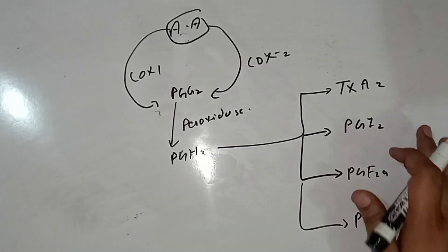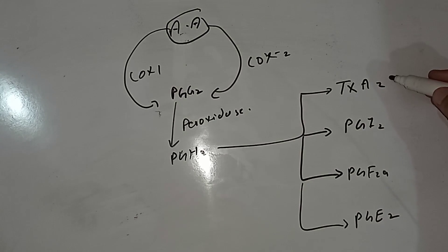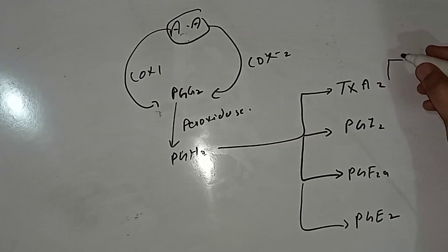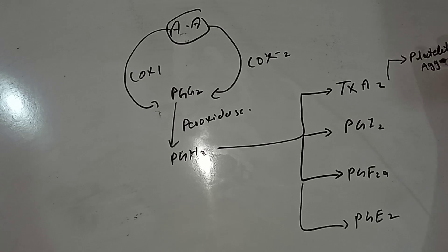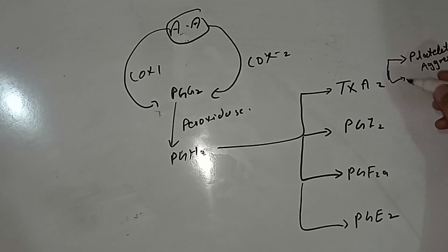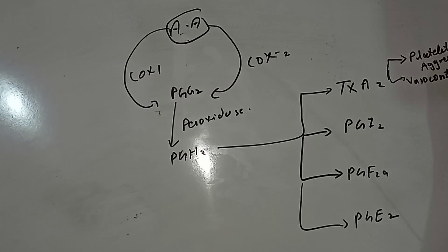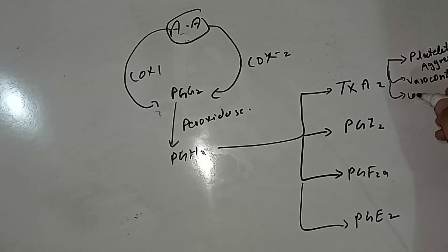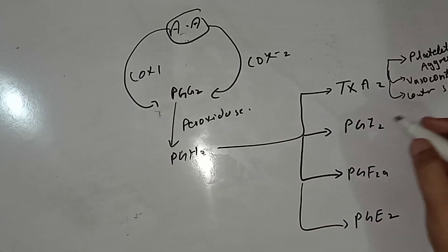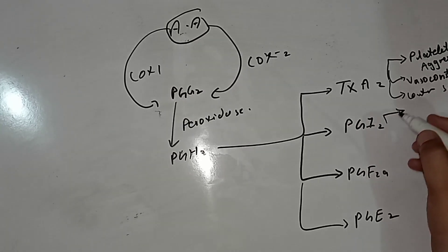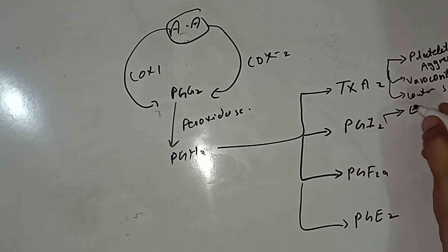Thromboxane A2 is produced principally in platelets. It promotes platelet aggregation, promotes vasoconstriction, and promotes contraction of smooth muscle cells.